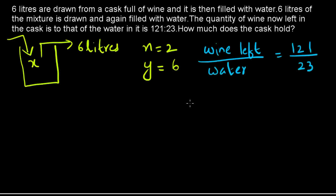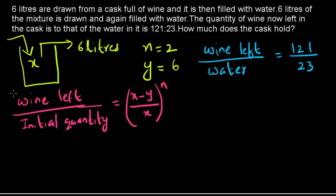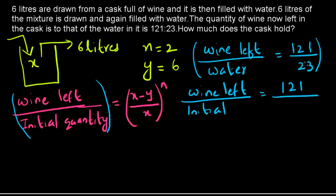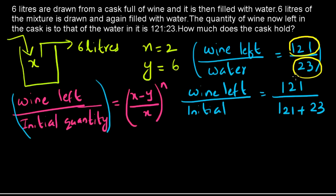Our formula gives wine left to initial quantity as ((x - y) / x)^n. If wine left is 121 and water is 23, then the initial quantity equals 121 + 23 = 144. So the ratio of wine left to initial quantity is 121/144.